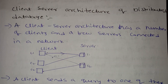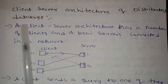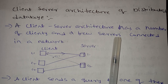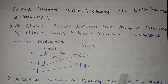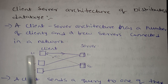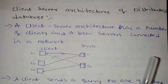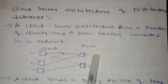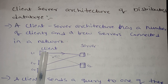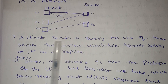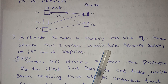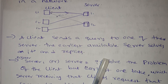First one is client-server architecture of distributed database. A client-server architecture has a number of clients and a few servers connected to any network. There are many clients and many servers; they are connected to a network. A client sends a query to one of the servers. The earliest available server solves it and replies.